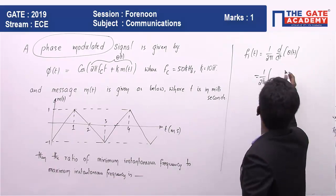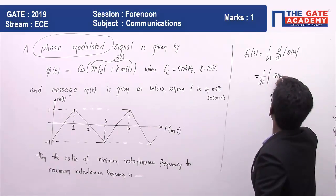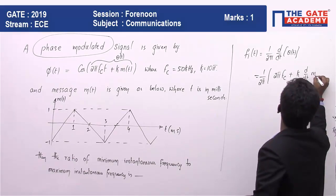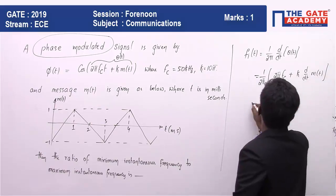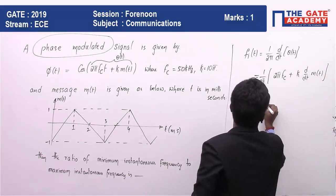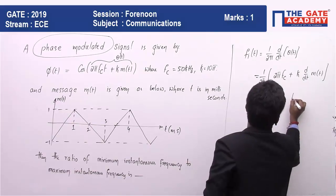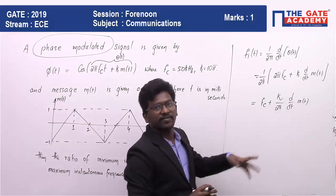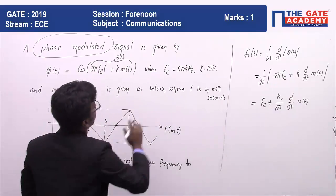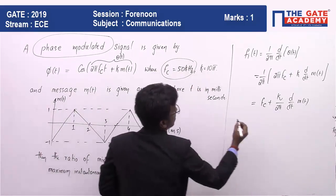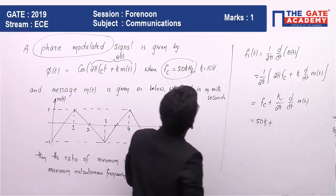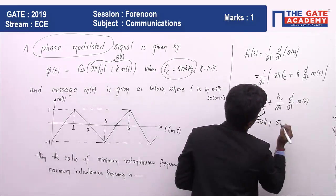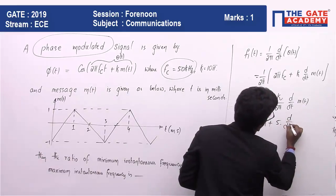1/(2π). If you differentiate, you will be getting 2π fc + k · d/dt of m(t). Now if you substitute, fi = fc + k/(2π) · d/dt of m(t). So fc is 50 kHz, that is 50k + k is given as 10π. 10π/(2π) means you will get 5 · d/dt of m(t).